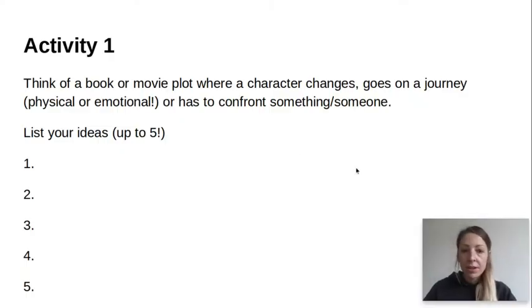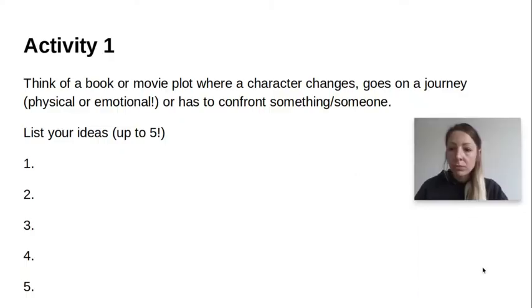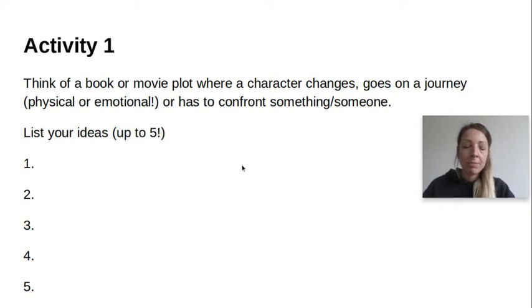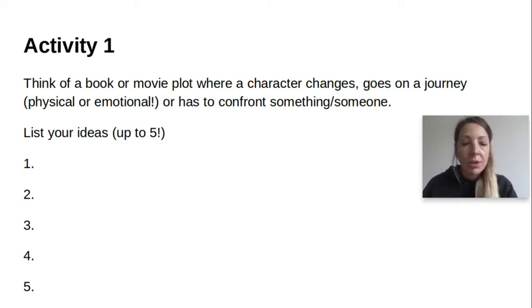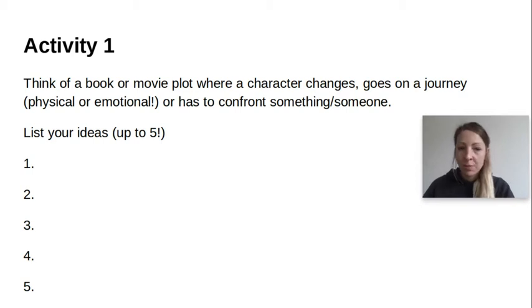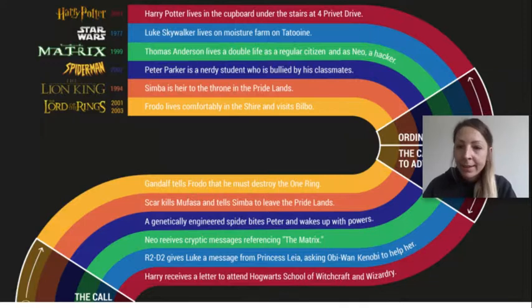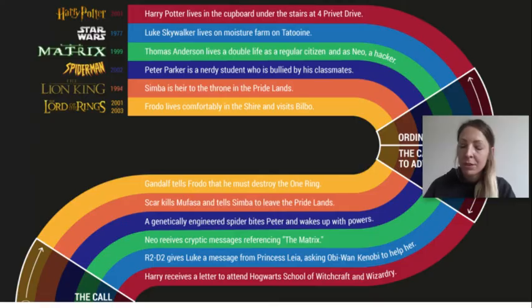First activity — this can be handwritten or typed in your Google Doc. Think of a book or a movie plot where a character changes, goes on a journey, or has to confront something or someone. You can list up to five ideas, but you can't use any of the ones we've already discussed. They're the obvious ones we're all thinking about, so try and think of some different ones.